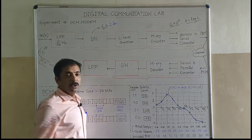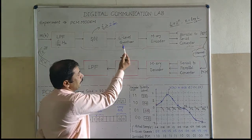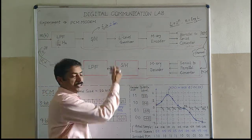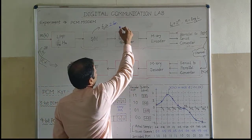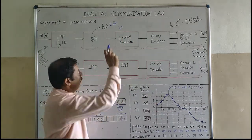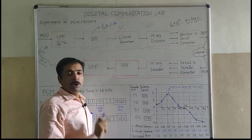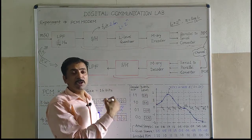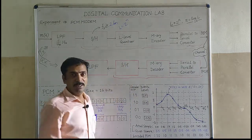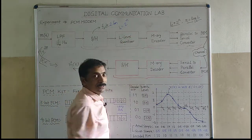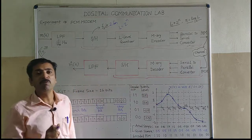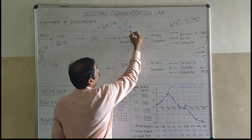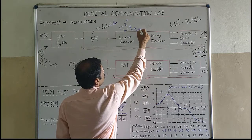What is quantization? Quantization is nothing but approximating the actual sample value to the nearest possible quantization level. We will select L, which represents the L-level quantizer. The quantization level L is related to N as L = 2 raised to the power N, where N is the number of bits used to represent each quantization level. In our kit, we have 3-bit PCM and 4-bit PCM. For 3-bit PCM, the number of quantization levels is 8. For N equal to 4, L equals 16.